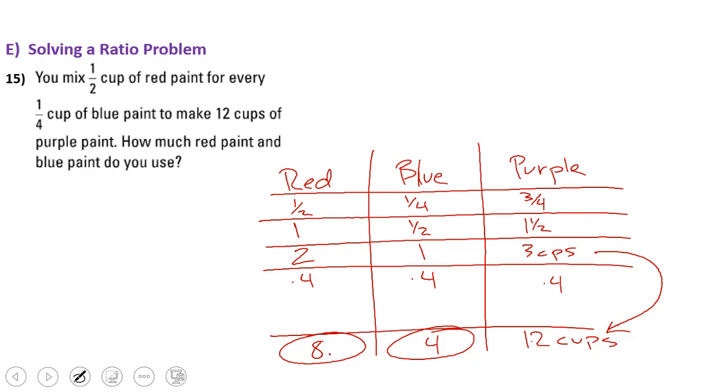which will give me 12 cups of purple. So 8 cups of red, 4 cups of blue will give me my 12 cups of purple. And that, of course, answers the question that we were asked. Making a table.